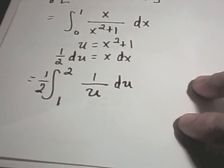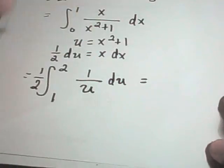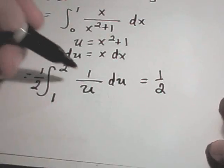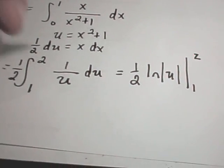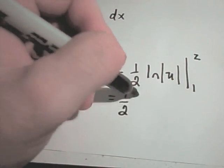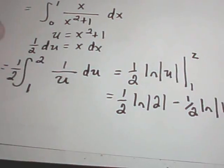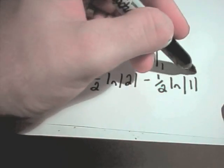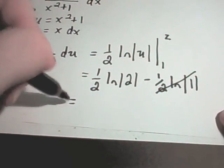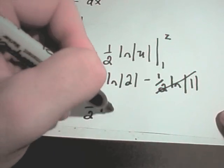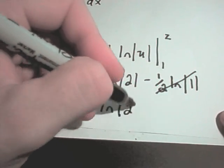Now I'm simply integrating 1 over u times 1 half du from 1 to 2. If I integrate this, the 1 half comes along, and the integral of 1 over u is ln of the absolute value of u. Evaluating from 1 to 2 gives 1 half ln(2) minus 1 half ln(1). The natural logarithm of 1 is 0, so that term is gone, and our solution is simply 1 half ln(2).